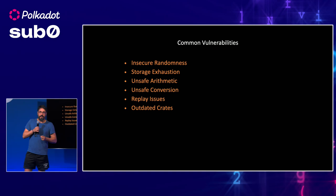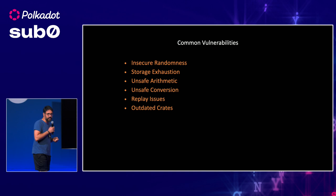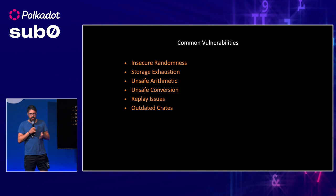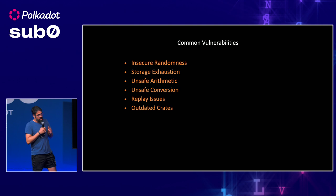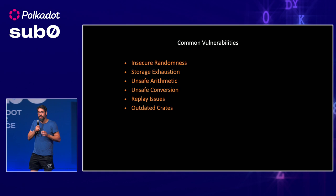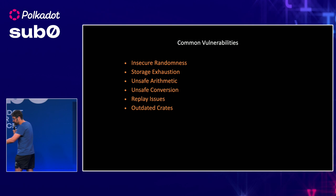There are actually a wide range of vulnerabilities you may face when performing a security audit. Here are some of the common vulnerabilities: insecure randomness, storage exhaustion, unsafe arithmetic, unsafe conversion, replay issues, and outdated crates. And if your Rust code has security problems out of this scope, those Rust-level issues can also propagate to your blockchain app despite using Substrate or any other framework.